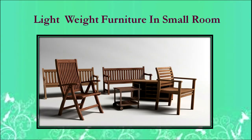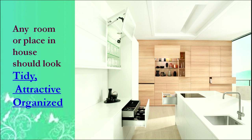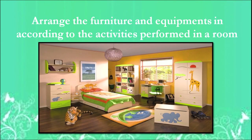In a small room, using lightweight furniture is much more appealing and practical. A well-organized kitchen should look tidy, attractive and organized — nothing scattered, with the floors and washing area neat. In a children's room, furniture and equipment arrangement should match the activities performed — a bed, open floor area for playing, a cupboard styled for children, and a small study table for a child in class five or six.